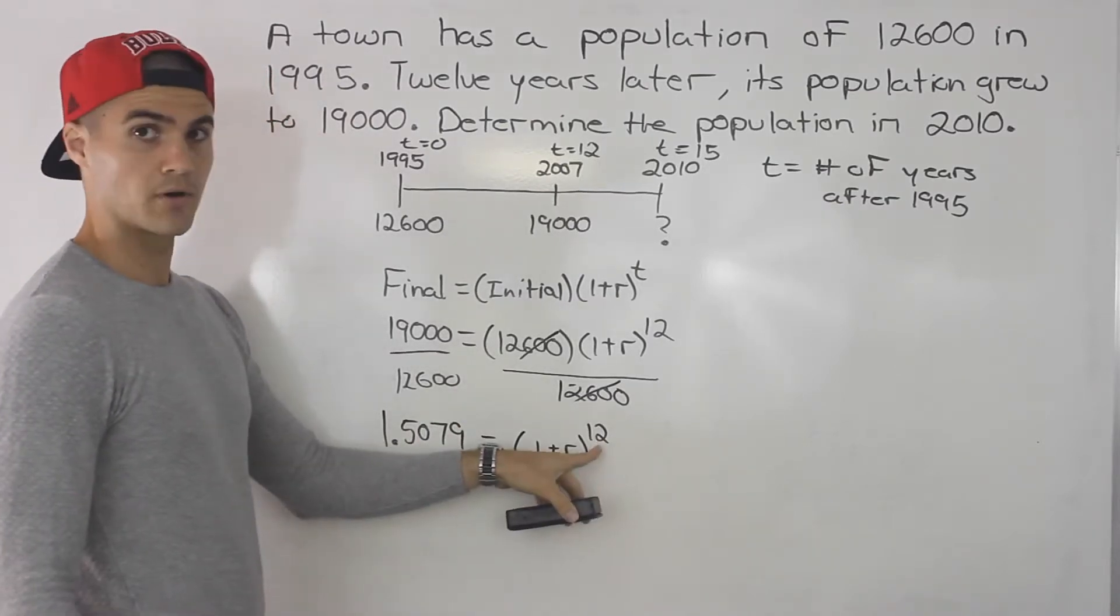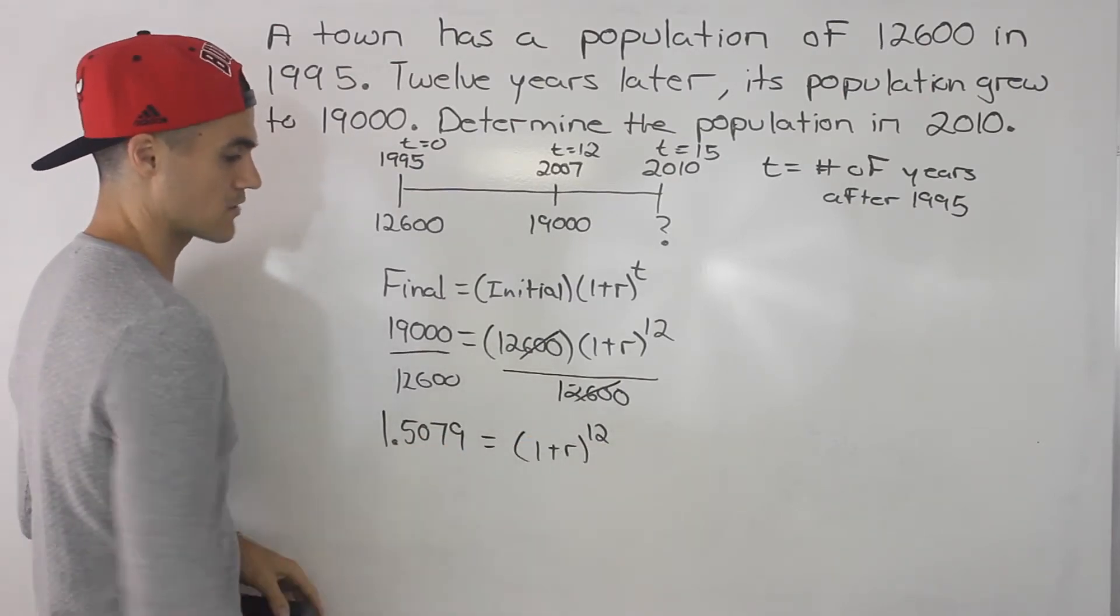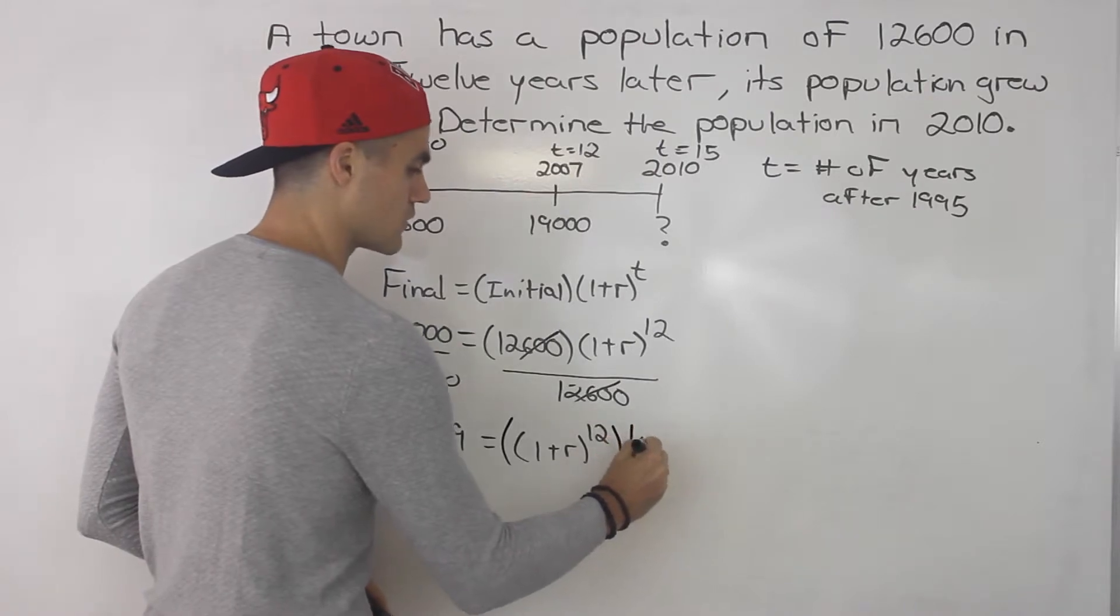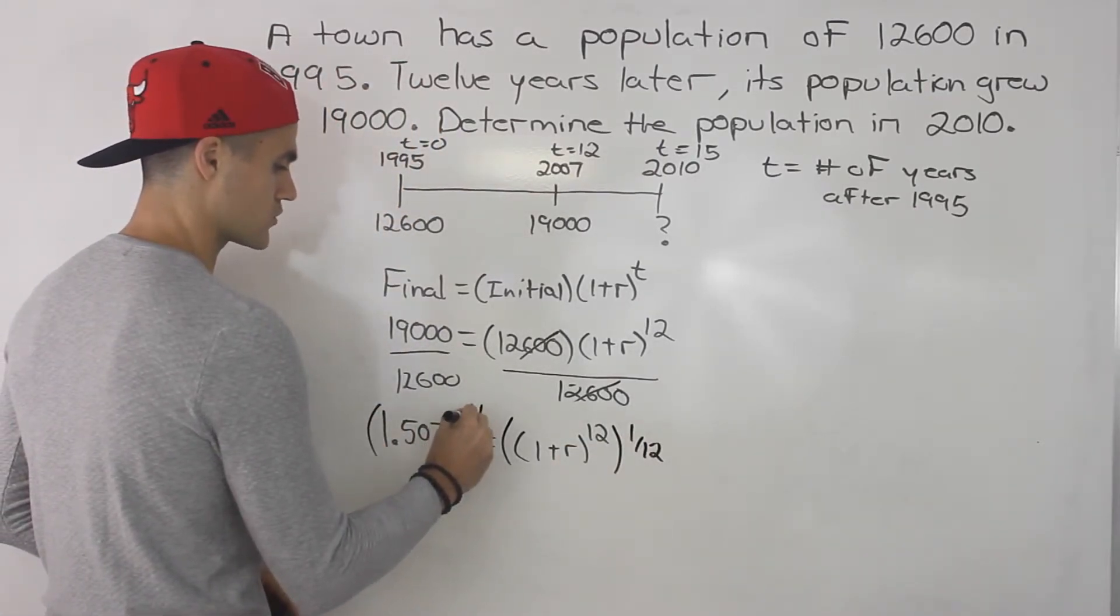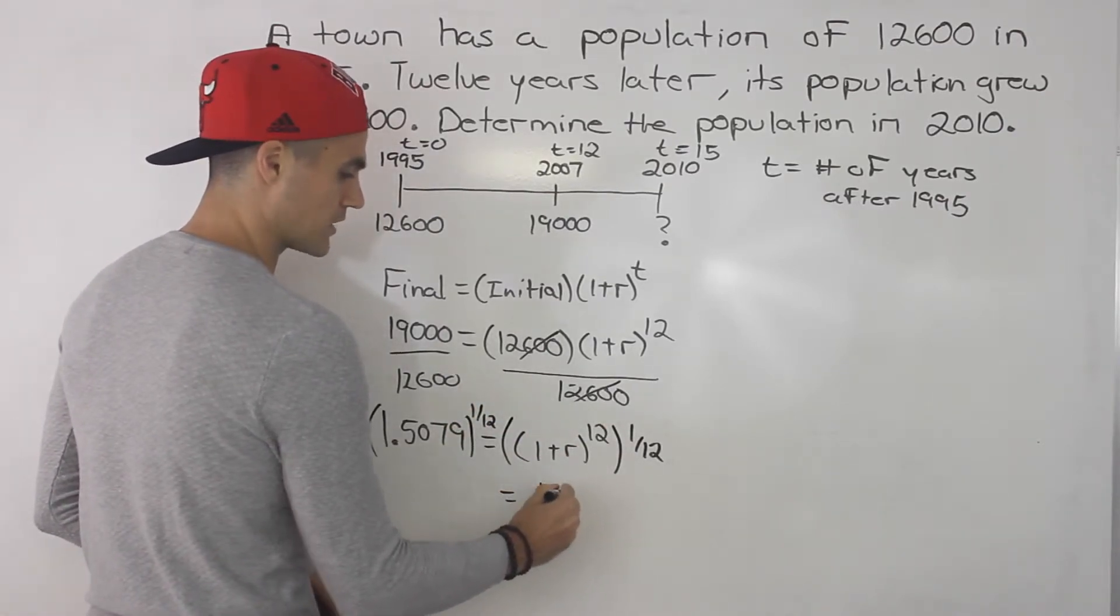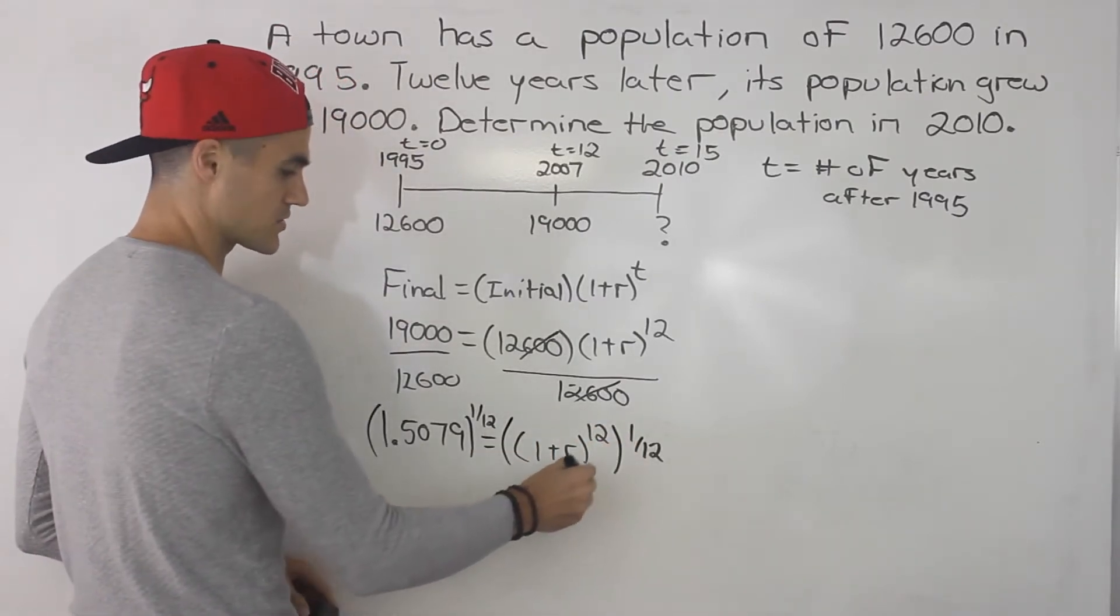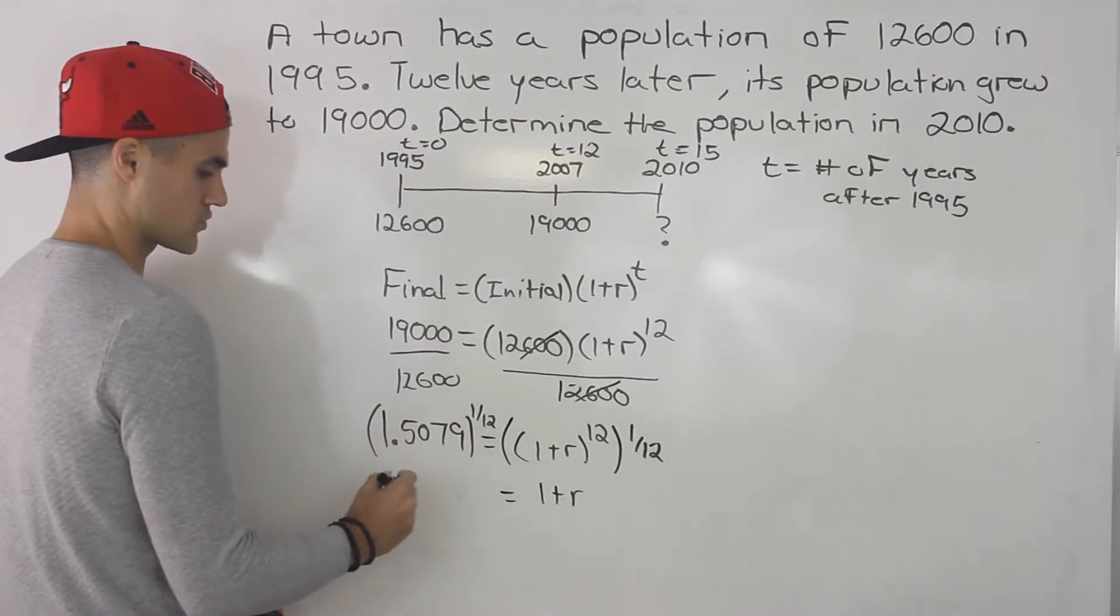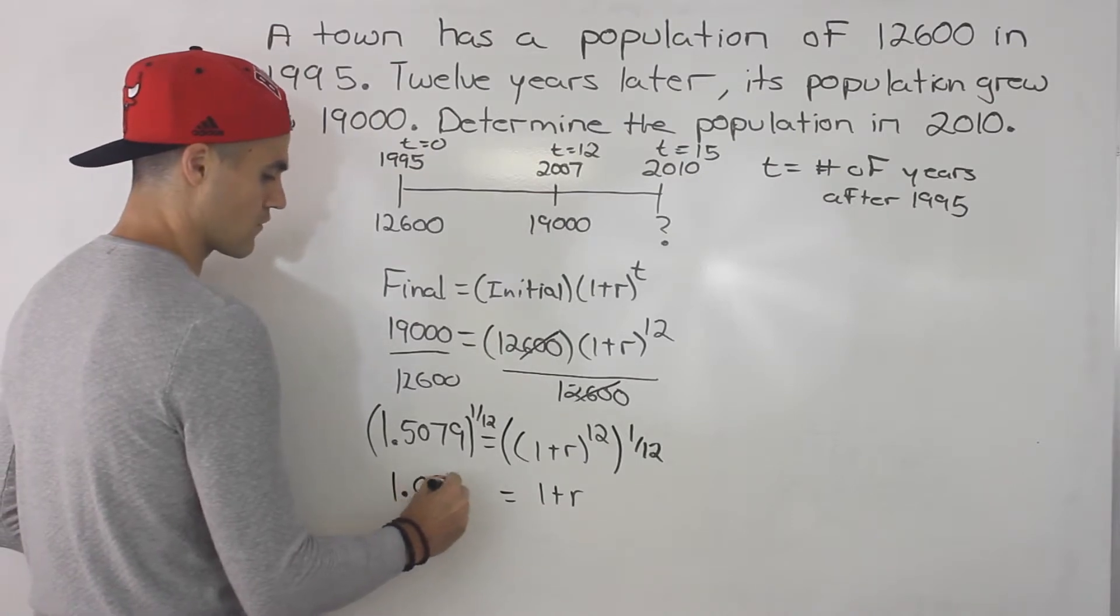And then to get rid of this exponent here, what we have to do is take the 12th root of both sides because this is to the power of 12, or taking both sides to the power of 1 over 12, basically the reciprocal of that. So we take this to the power of 1 over 12. So 12 times 1 over 12, that would give us 1 plus r, because 12 times 1 over 12 is just 1. So 1 plus r to the power of 1 is just 1 plus r. And then 1.5079 to the power of 1 over 12, that would give us 1.0348.